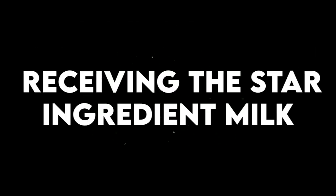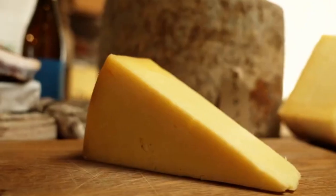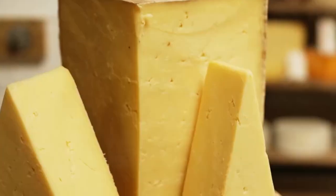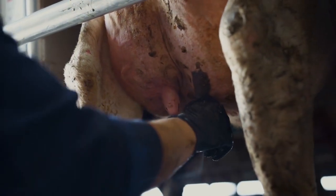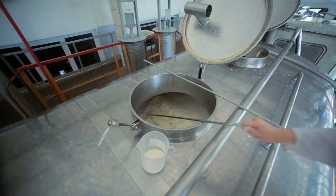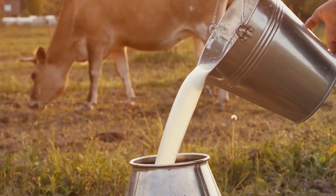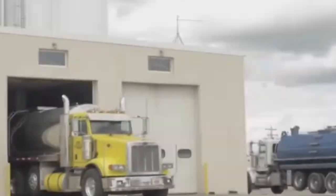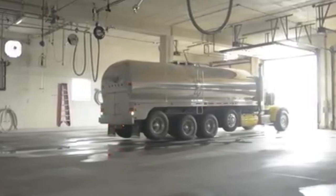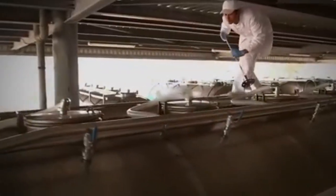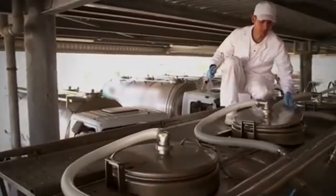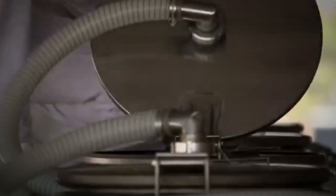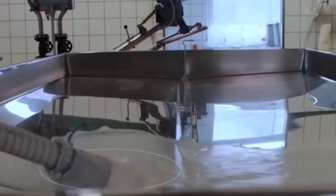Receiving the star ingredient: milk. The very first step in making cheese is getting the milk, and that's the most important part. Milk is the main ingredient in cheese, so it has to be fresh and clean. Big cheese factories get their milk from local dairy farms, and it arrives in huge tanker trucks that can carry thousands of gallons at once. As soon as the milk reaches the factory, workers test it to make sure it's fresh, safe, and the right kind for the type of cheese they want to make.